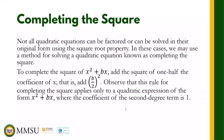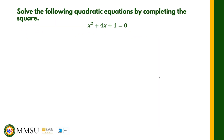We will illustrate this in the following examples. Solve the quadratic equation x² + 4x + 1 = 0 by completing the square. The first step is to transpose the constant term to the other side of the equation, so the equation becomes x² + 4x = −1.